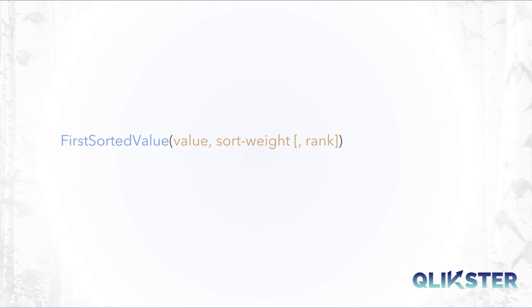The function returns the value of the column 'value' where the column 'sort weight' has its minimum value. The rank argument can be used to get the second lowest, third lowest, and so on value of the column sort weight.